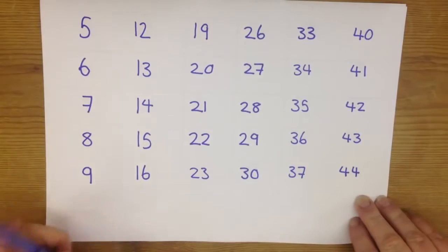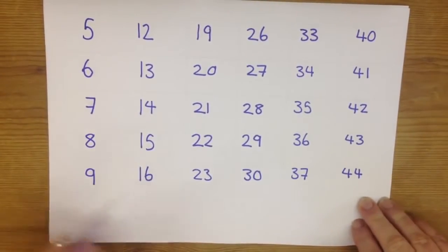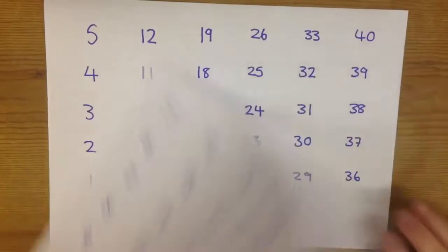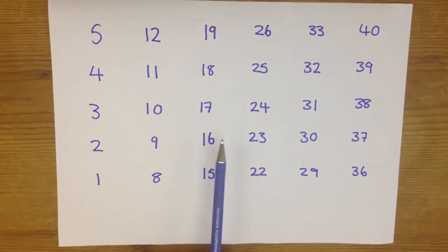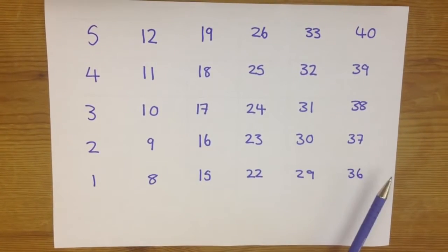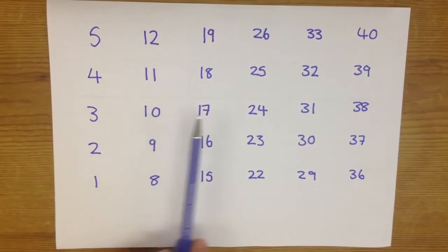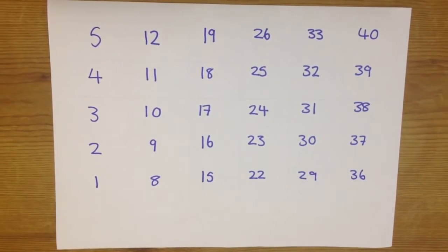And then if we go the other way, so that's plus 1. Now if we go minus 1, that gives us again 5, 12, 19, 26, 33 and 40. And then we've gone down to 4, 11, 18, so on and so forth.